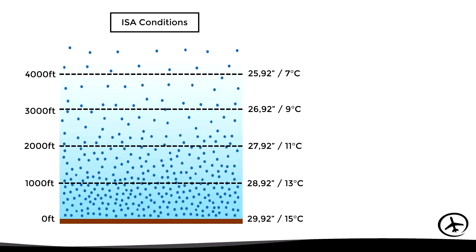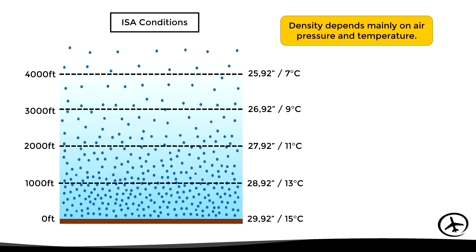Air density depends mainly on pressure and temperature. Considering that in the ISA atmosphere the pressure and temperature at a certain altitude are always the same, this means that the density at a certain altitude will also always be the same. To illustrate this, let's assign a fictitious density value to each altitude in the ISA atmosphere depending on the pressure and temperature at that altitude.